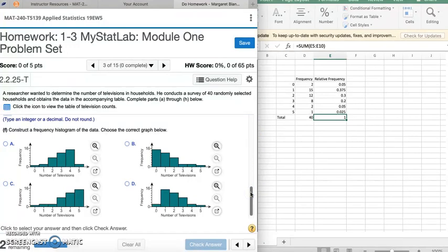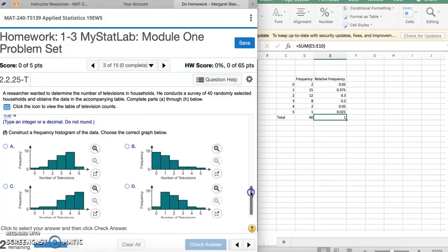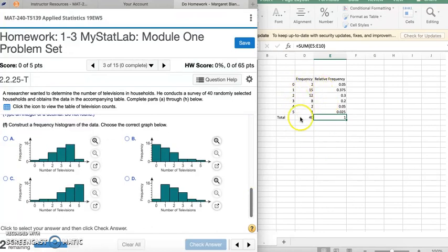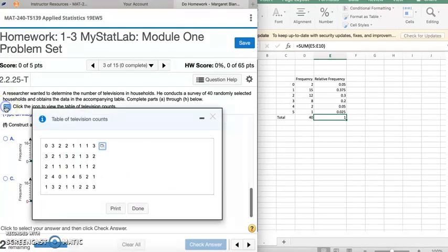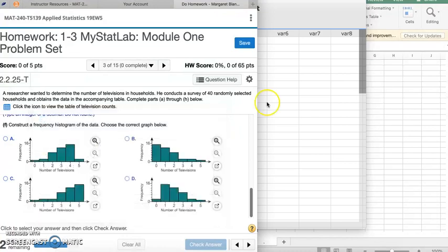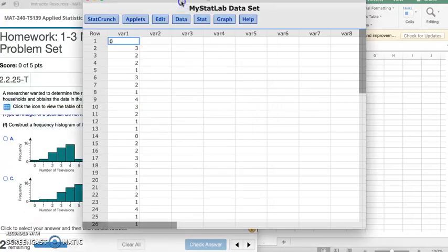Now, part F, construct a frequency histogram of the data. Choose the correct graph below. We can do this a couple of ways. One, we can just compare our values from our frequency distribution and see which histogram here matches with it. And I can tell you right now it's going to be this one because you see we have a little, more, and then it tapers off. But we can also generate this histogram in StatCrunch to double check and to see how to do it. So I'm going to click on the data set, and then I'm going to open in StatCrunch.